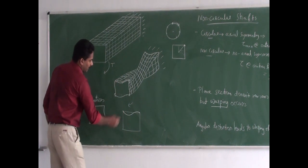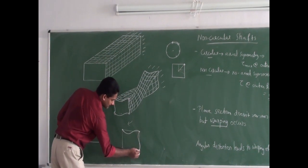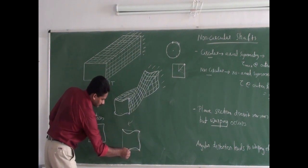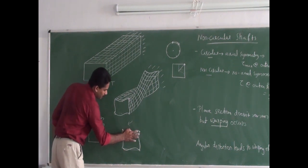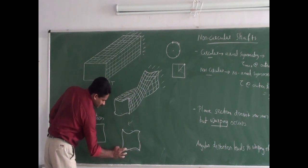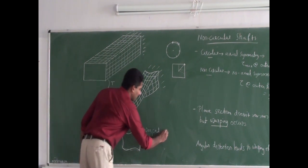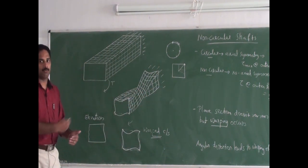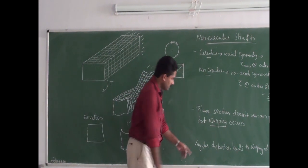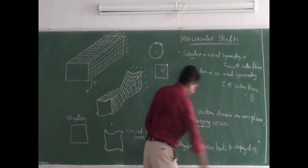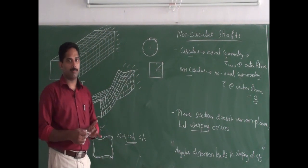The distortion at these points creates a warped cross-section. The warping phenomenon can be observed in a non-circular, non-symmetric shaft. The angular distortion leads to warping of the cross-section of the shaft. Remember this theory — it is expected as a short answer question.